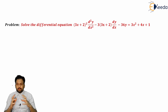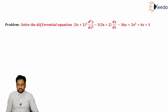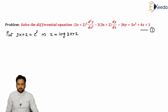If we know the complete methodology of homogeneous forms, we can easily solve this kind of equation. First, I will mark the given equation as equation number one. We substitute: let 3x+2 = e^z, so z = log(3x+2).